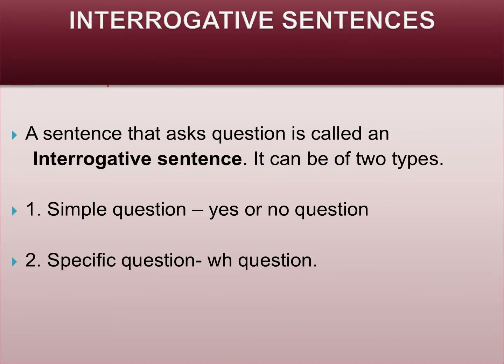A sentence that asks a question is called an interrogative sentence. It can be of two types. The first one is a simple question, and the second one is a specific question. A simple question is a yes or no question. A specific question means a WH question — the question starts with what, when, why, where, or how. It is called a specific question.